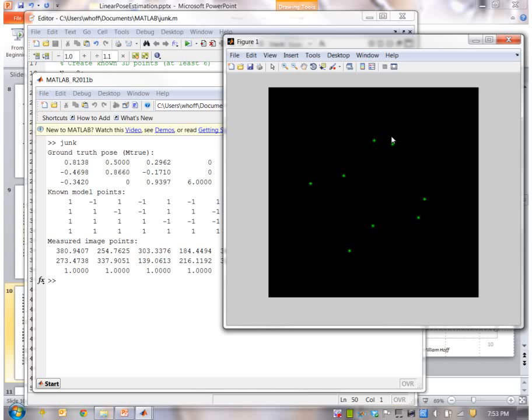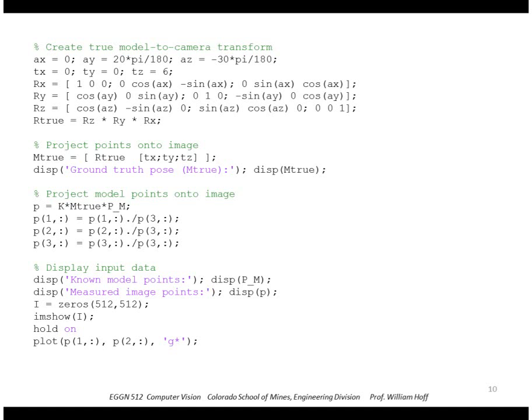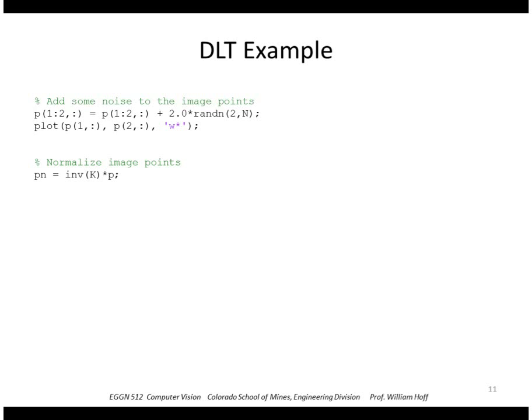The green points are the eight points that I projected. Then, to be more realistic, we'll add some noise to the image points. The randn function adds normal random numbers, namely Gaussian distributed random numbers of unit variance. We're going to multiply that by 2, that's going to be our sigma of the Gaussian.